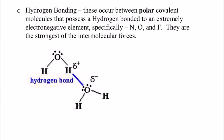The next and last kind of intermolecular force is called hydrogen bonding. This occurs in polar covalent molecules. The hydrogen has to be bonded to nitrogen, oxygen, or fluorine in order for hydrogen bonding to happen, and this is the strongest of the intermolecular forces. One really good example is a water molecule. We have a polar covalent bond here and here, and hydrogen is bonded to oxygen, which fills that requirement. The oxygen is going to be a partially negative charge, and each of the hydrogens are partially positive.